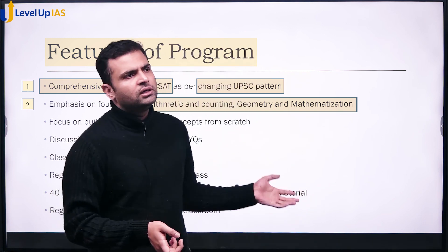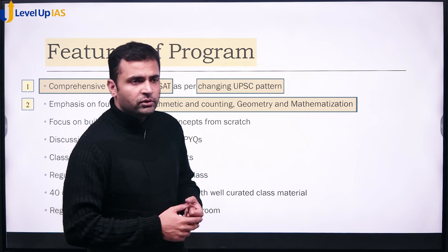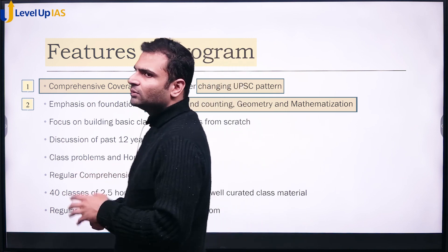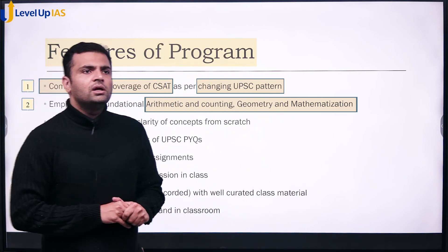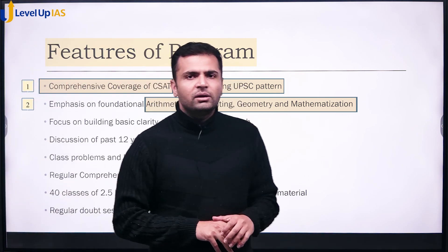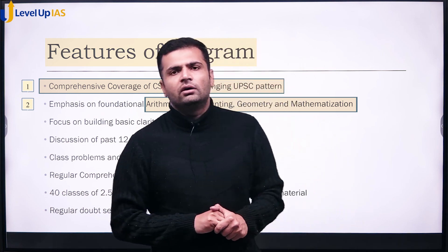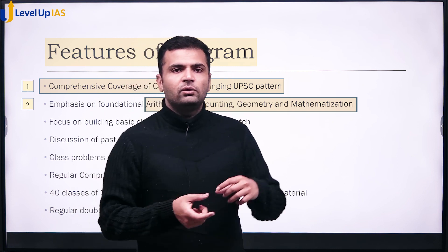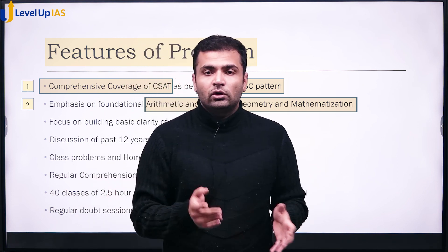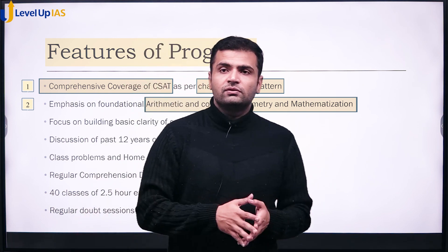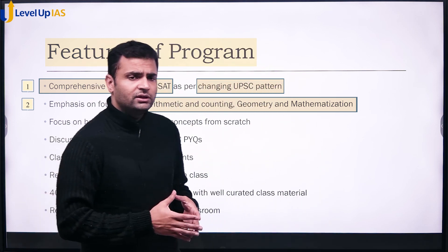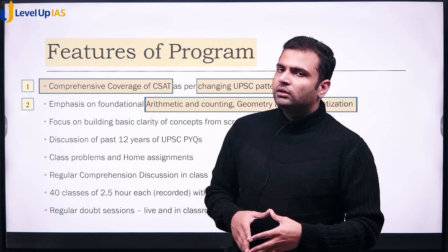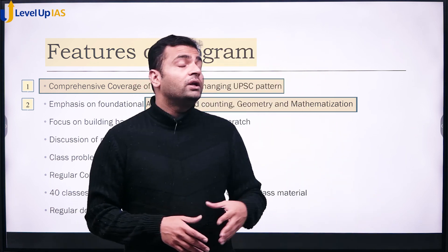Questions from counting principles, which are essentially arithmetic, can be studied under permutations and combinations. Comprehension also has around 27 questions, but the questions asked are sometimes very different — testing the student's ability to read between the lines, truly comprehend what the author means, and draw inferences. All these skills are essential to get through CSAT.